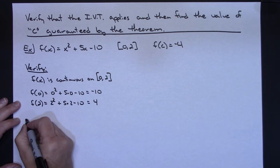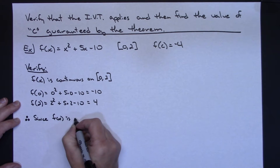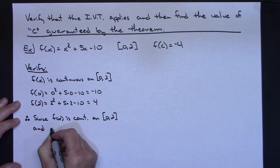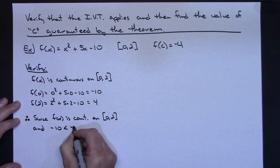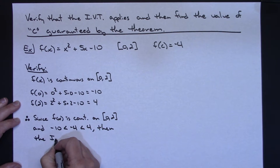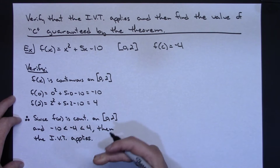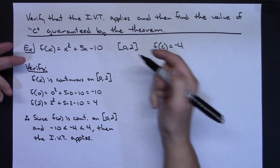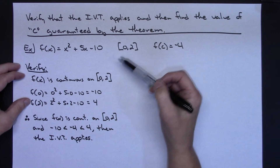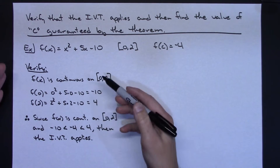Now I can draw a conclusion. Therefore, since F of X is continuous on the closed interval from 0 to 2, and negative 10 is less than K, which is less than F of B, the Intermediate Value Theorem applies. Note: if this function were not continuous on the interval, or if K did not fall between F of A and F of B, then the Intermediate Value Theorem would not apply. In this scenario, it does.